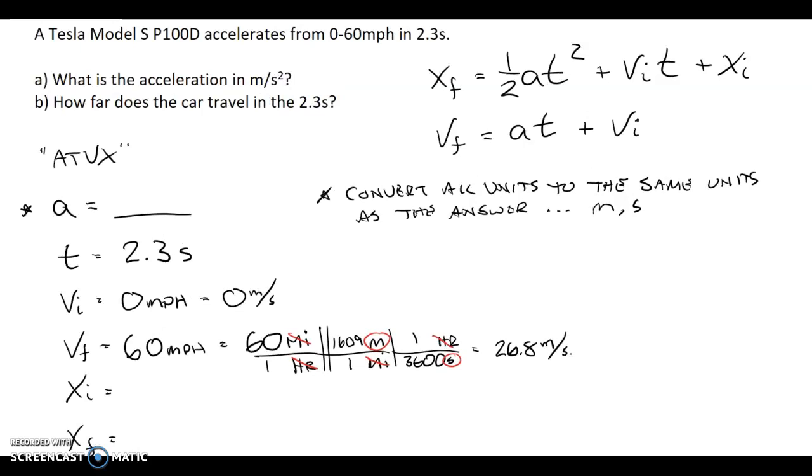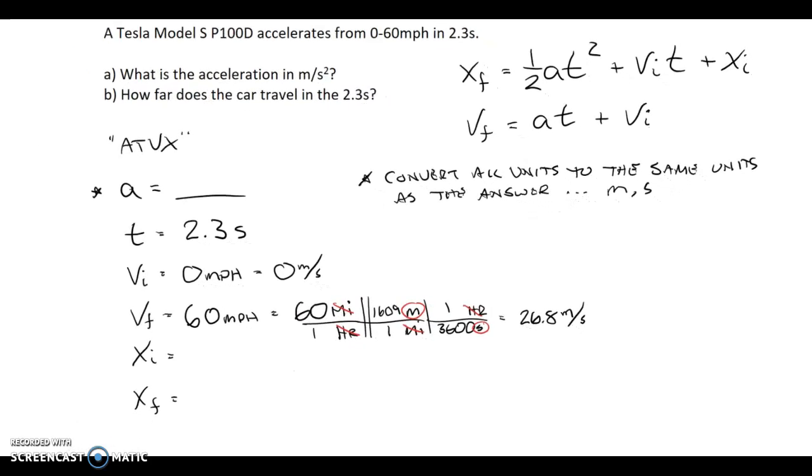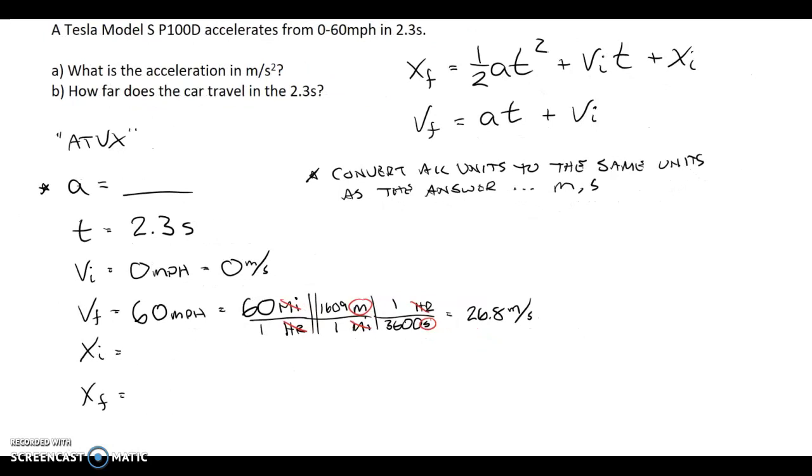So this car goes 0 to 26.8 meters per second in 2.3 seconds. My table will also have an initial position. It's convenient if they don't tell you anything about where you're starting. We'll always call the initial position 0. And we can then determine what our final position is going to be. How far is really just a change in position, which would be x final minus x initial. If x initial is 0, then the change in position would just be equal to x final. So my answer for x final is actually the answer that I want for part b.